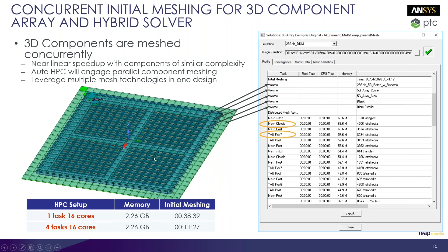For 3D component arrays, you can now perform concurrent meshing of each element. You can assign different mesh types per element — either a classical mesh or a tau-flex mesh — and leverage HPC options with multiple nodes or threads. Tasks can be assigned to run in parallel, so each element is meshed concurrently depending on available hardware. For example, solving one task on 16 cores might take around 40 minutes of meshing time, but with four concurrent tasks, meshing time is significantly reduced.